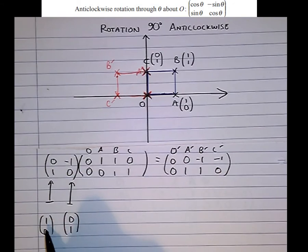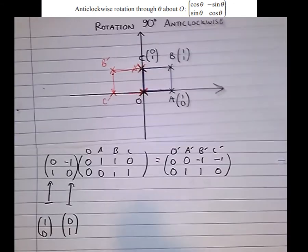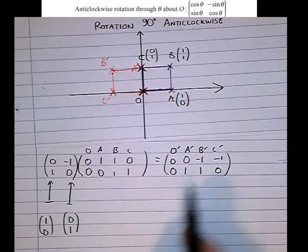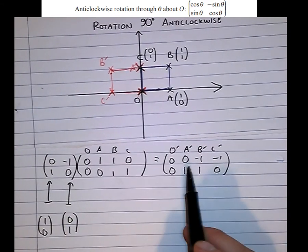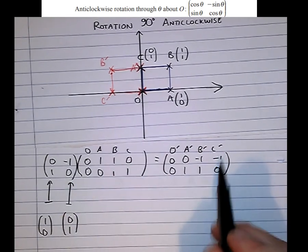So here, 1, 0 gets mapped to 0, 1. Yeah, that's correct. And 0, 1, 0, 1, there it is there, gets mapped to minus 1, 0. Yes, 0, 1 gets mapped to minus 1, 0.